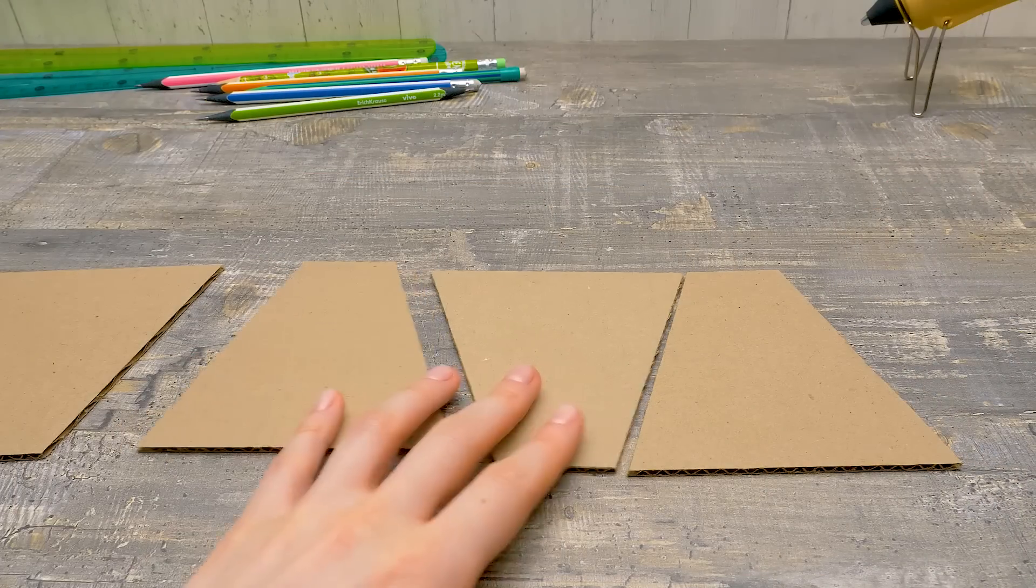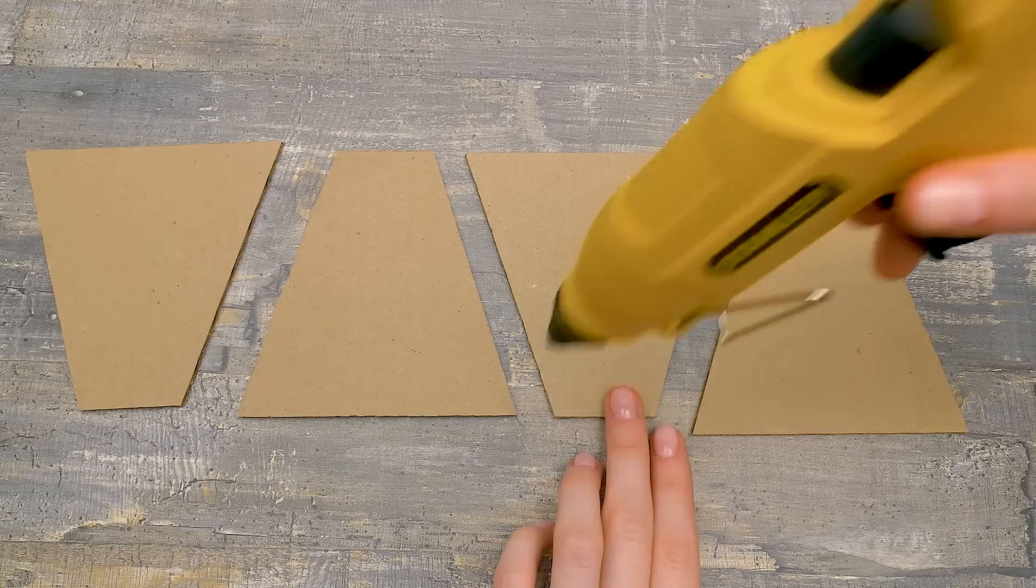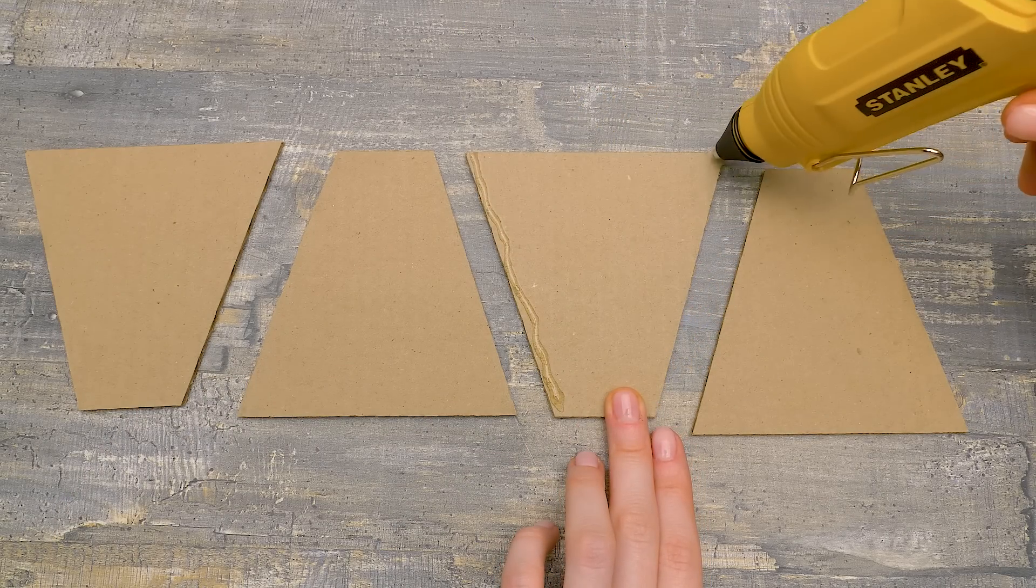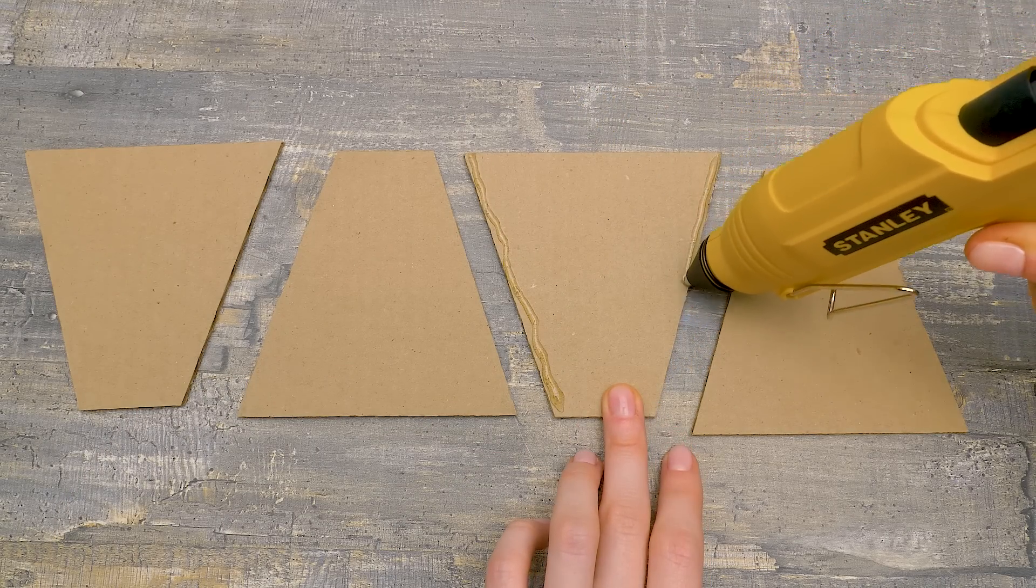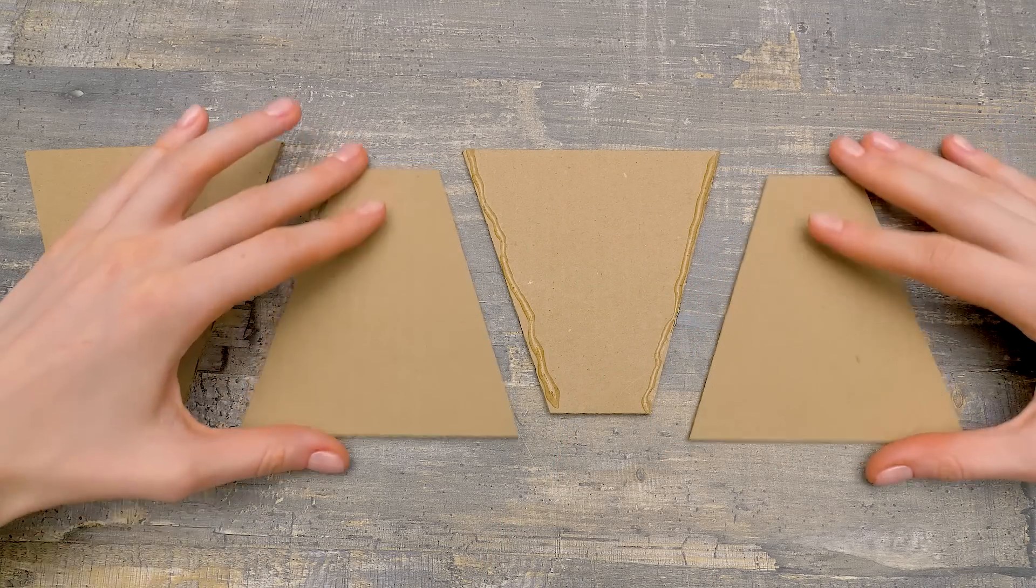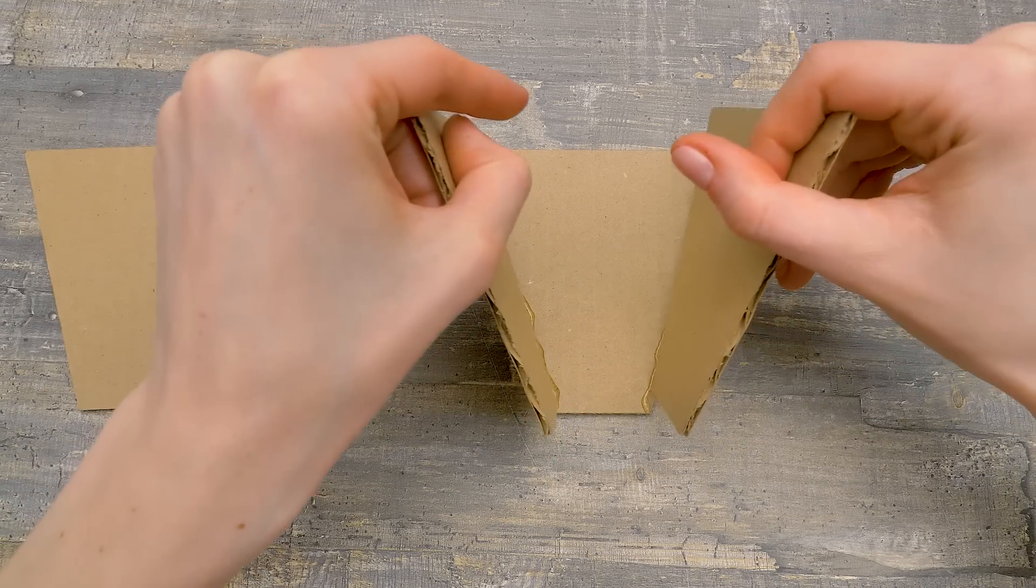We'll need four pieces like this. Now we need to glue them together. The hot glue gun is a perfect thing for crafting, but be very careful with it. Now we'll place the pieces to form a funnel.